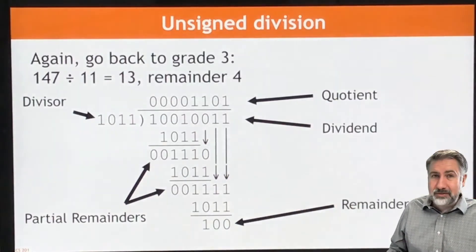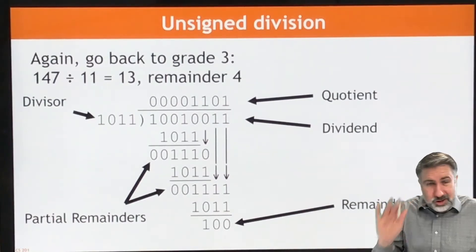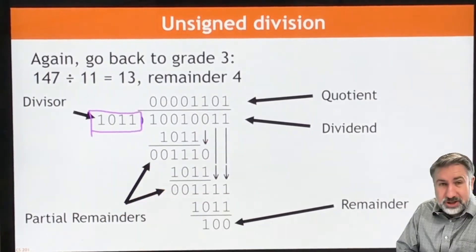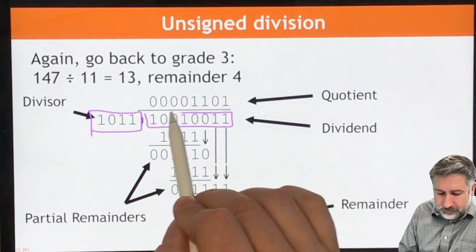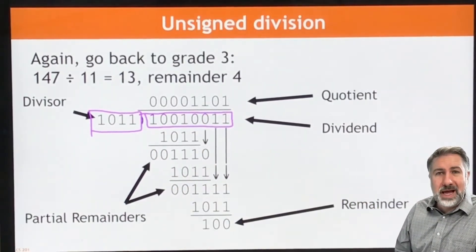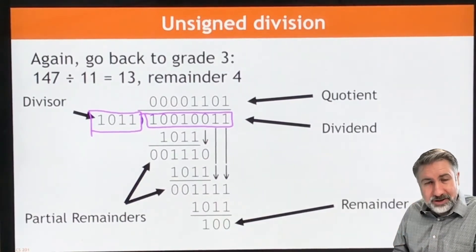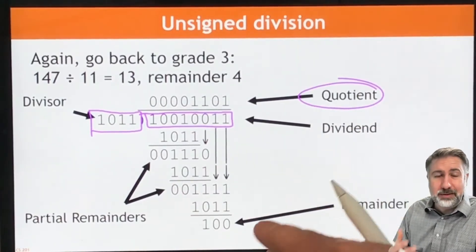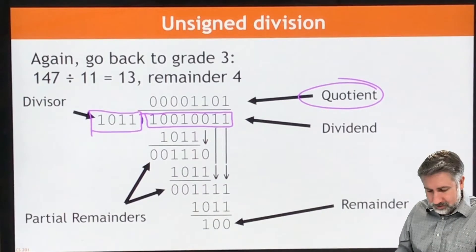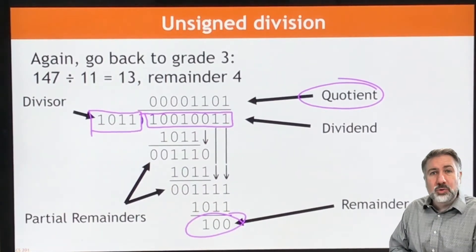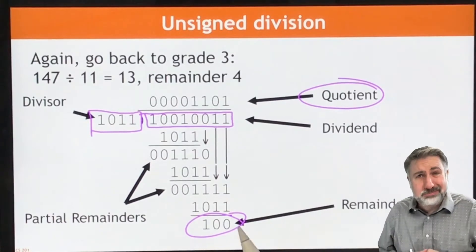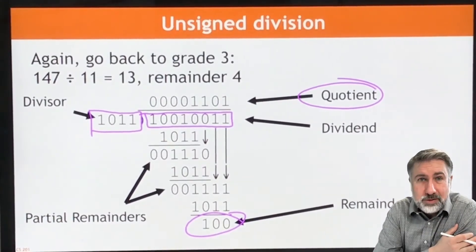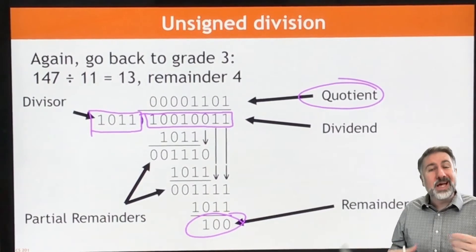To remind ourselves from high school, this is how division looks — long division written out by hand. You start with the divisor, which is the number that you're putting into the dividend. The dividend can be larger than the divisor. We're going to see how many times the divisor fits in the dividend, and the result of that is the quotient. We also have a remainder. We're not going to be using fractional numbers — we're just using integers — so when we do a division, we're going to get a quotient and a remainder.